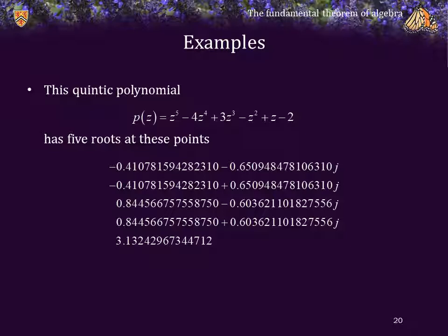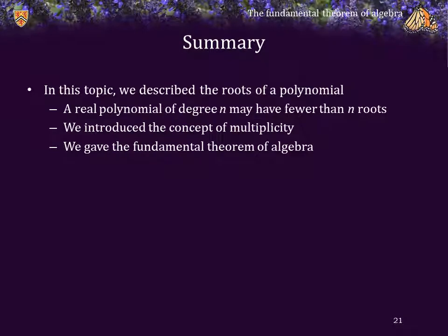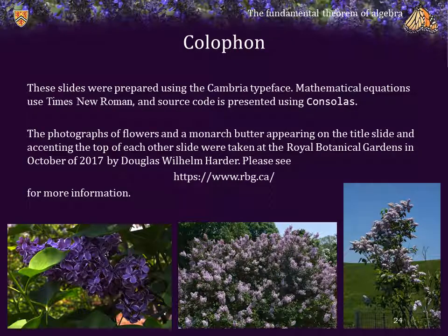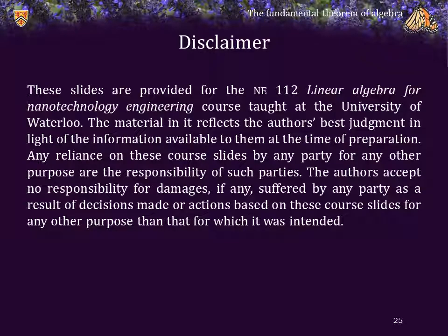You should also notice something else — what is the relationship between the first and second roots and the second and third roots? How would you describe that similarity? In summary, in this topic we have described the roots of a polynomial. We've observed that a real polynomial of degree n may have fewer than n real roots. We introduced the concept of multiplicity, and we gave the fundamental theorem of algebra: a polynomial of degree n has exactly n complex roots when counting multiplicity. Cheers!